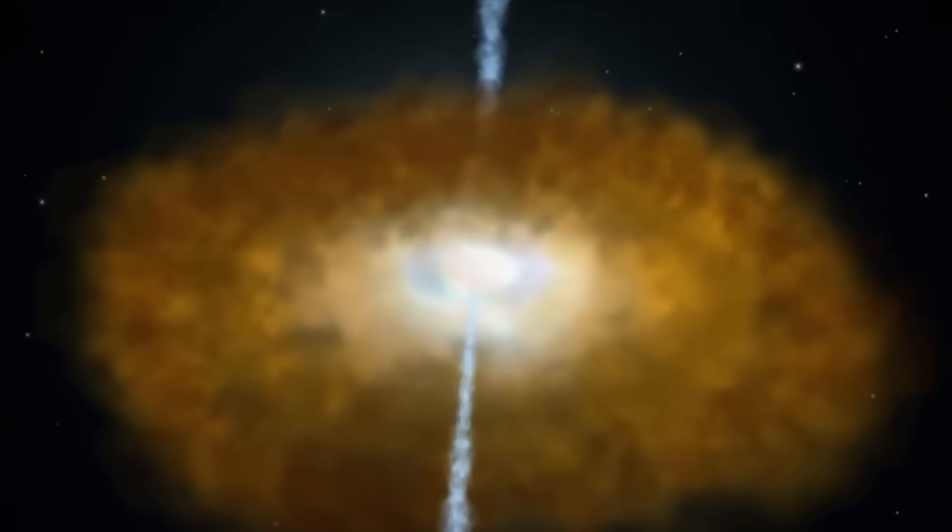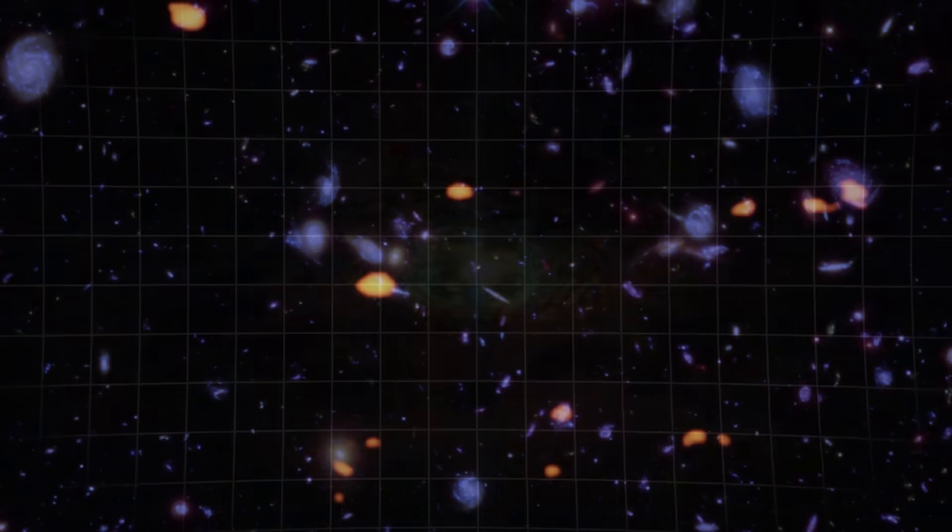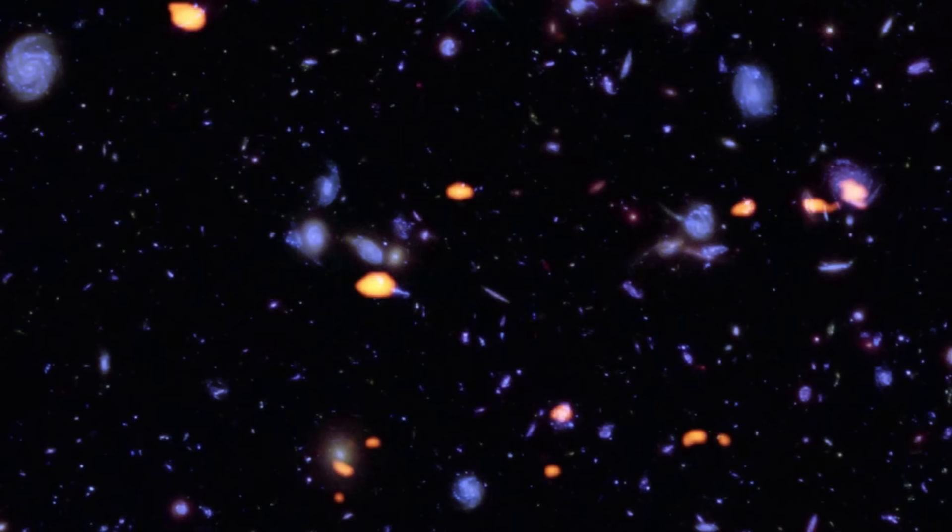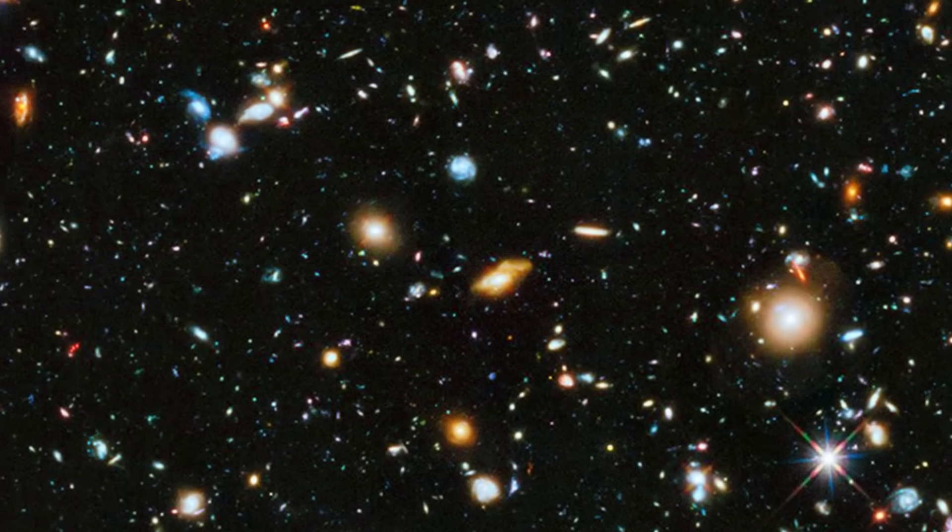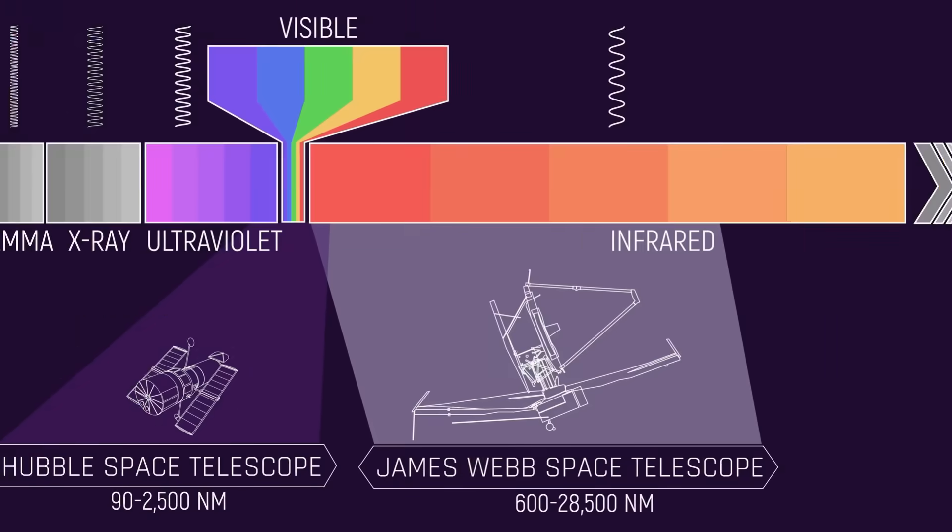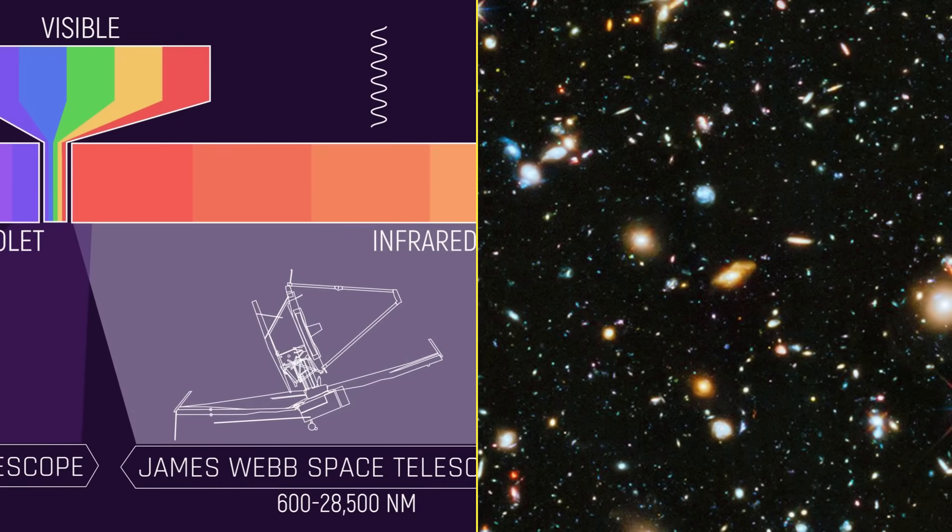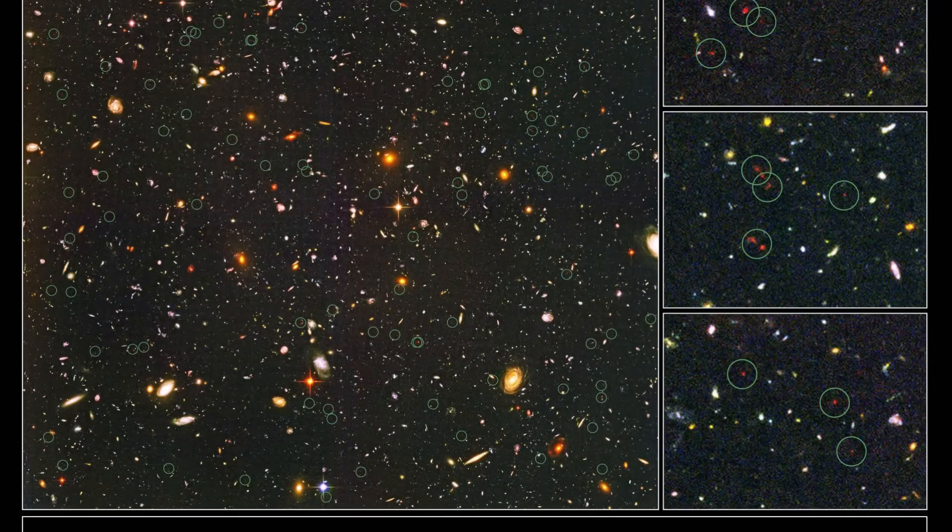And between us and those distant beacons lay clouds of cosmic dust, veiling entire populations of galaxies from view. Hubble's Ultra Deep Field, for all its detail, was just a sliver, shaped by the limits of its technology and the narrow slice of the spectrum it could see.